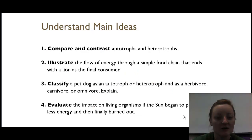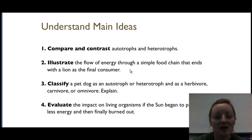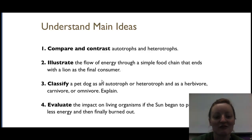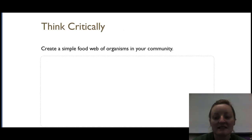Make sure your notes include: a comparison of autotrophs and heterotrophs; a food chain that ends with a lion as the final consumer; a classification of a pet dog as autotroph or heterotroph and whether it's an herbivore, carnivore, or omnivore; and an explanation of the impact on living organisms if the sun began to produce less energy and finally burned out. Also, in your printed notes there is a place to make a food web of organisms in your community. See you next time.